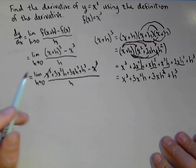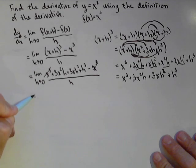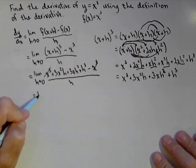All over h. Because now, those x cubes cancel. And we get a very important fact, which is that every term in the numerator now has an h in it.